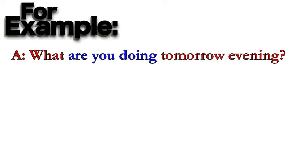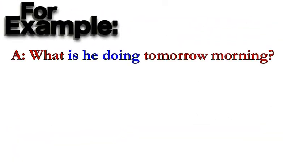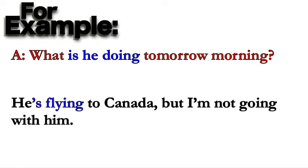For example: What are you doing tomorrow evening? I'm playing volleyball tomorrow evening, but Tom isn't playing with us. Another example: What is he doing tomorrow morning? We are talking about a future plan, so we use the present continuous. He is flying to Canada, but I am not going with him.